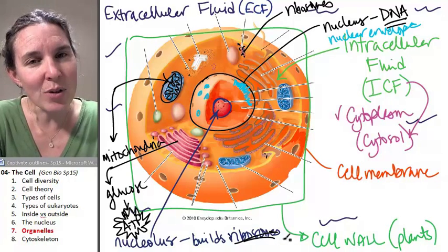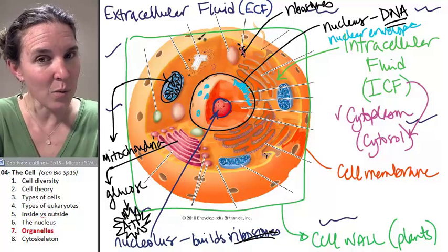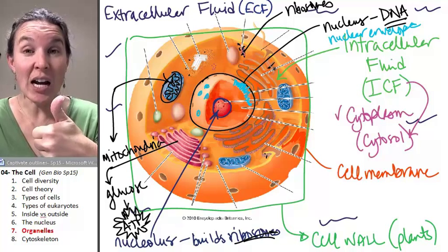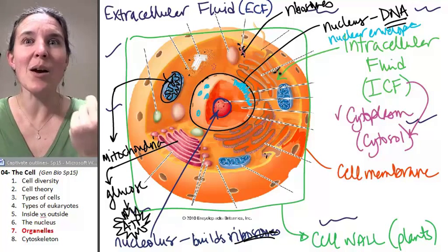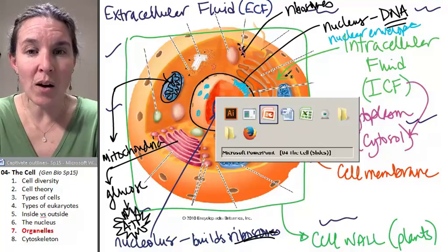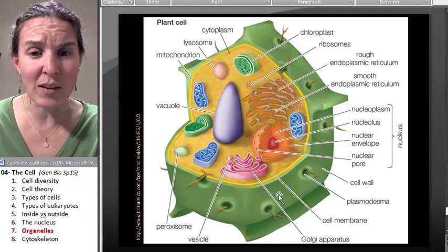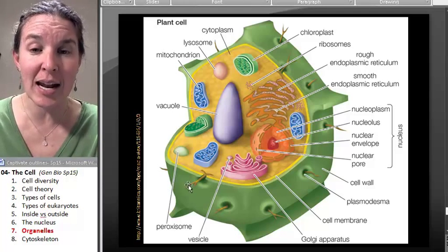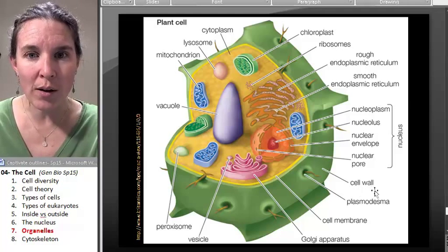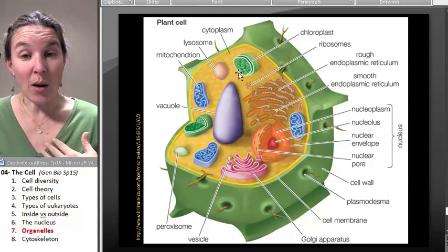The last organelle is not found in this cell here. This was an animal cell — a eukaryote. Our other cell isn't an animal cell at all. See how boxy this one is? It actually has a cell wall. That green thick thing is a cell wall.